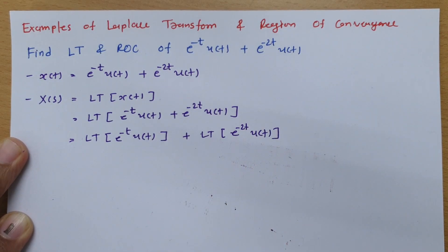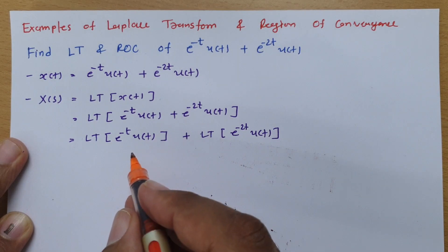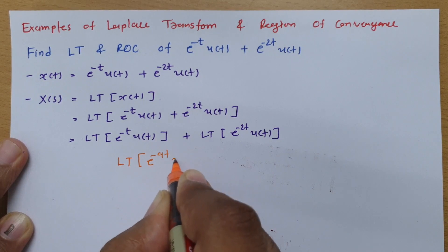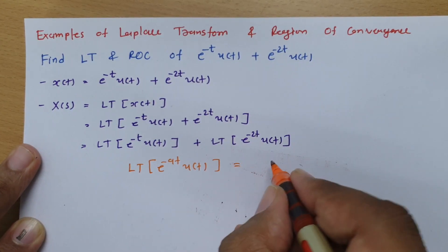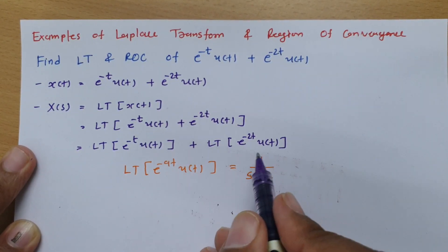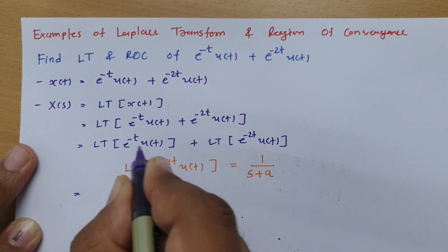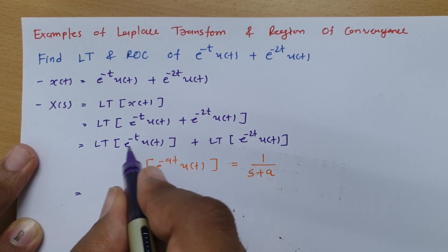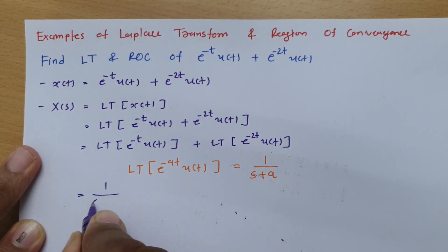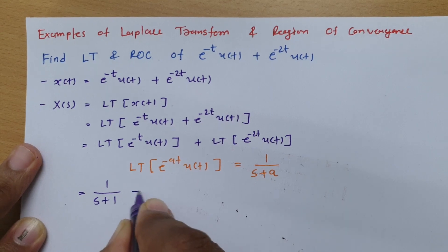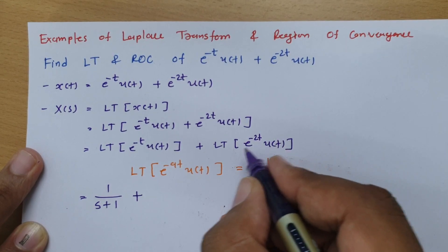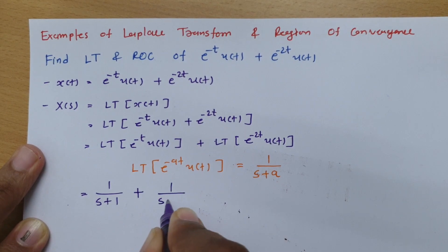As derived in previous classes, the Laplace transform of e^(-at)u(t) is 1/(s+a). Applying this formula, with a=1 for the first term we get 1/(s+1), and with a=2 for the second term we get 1/(s+2).